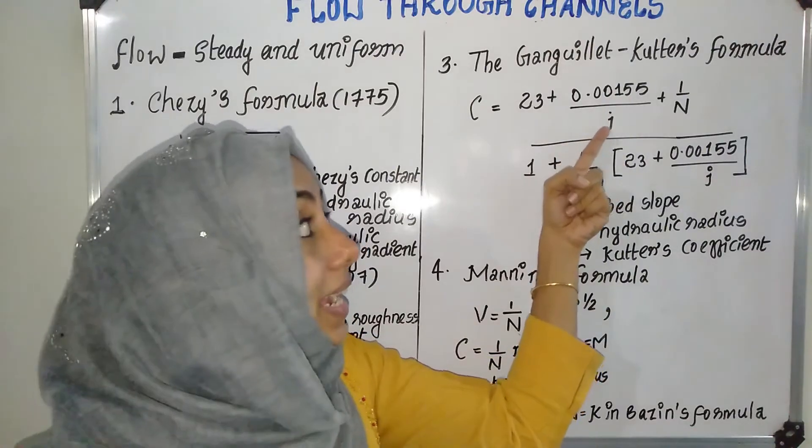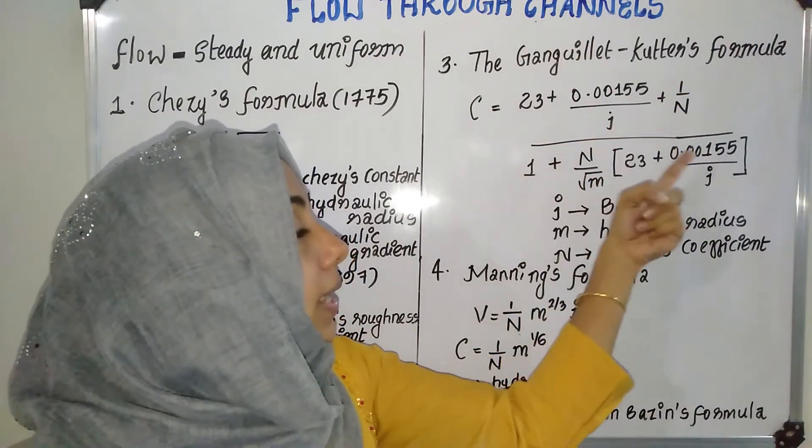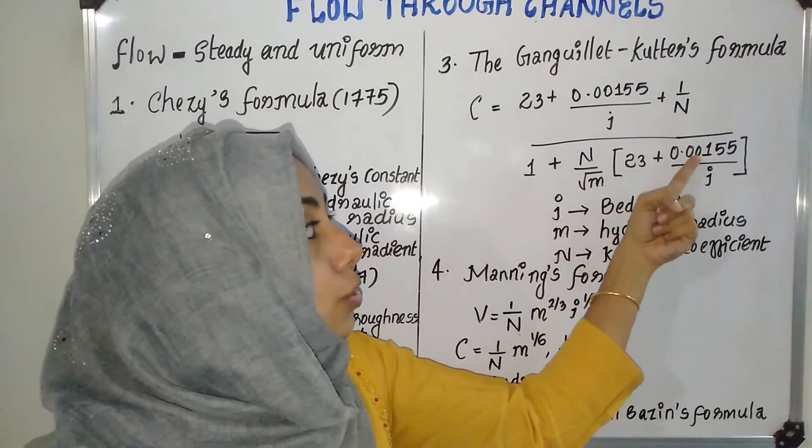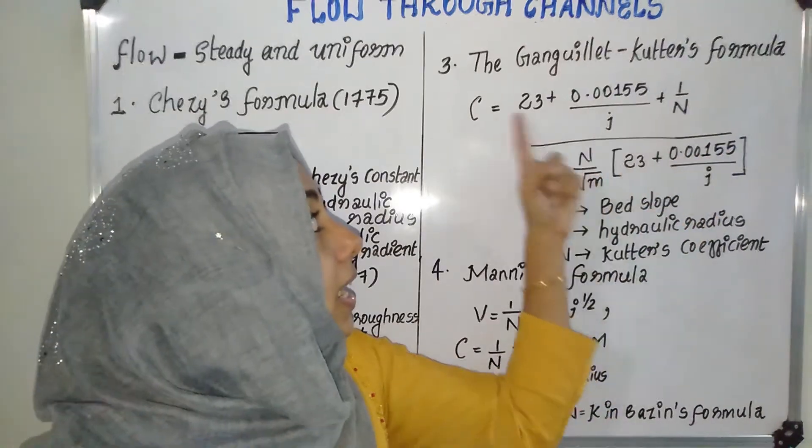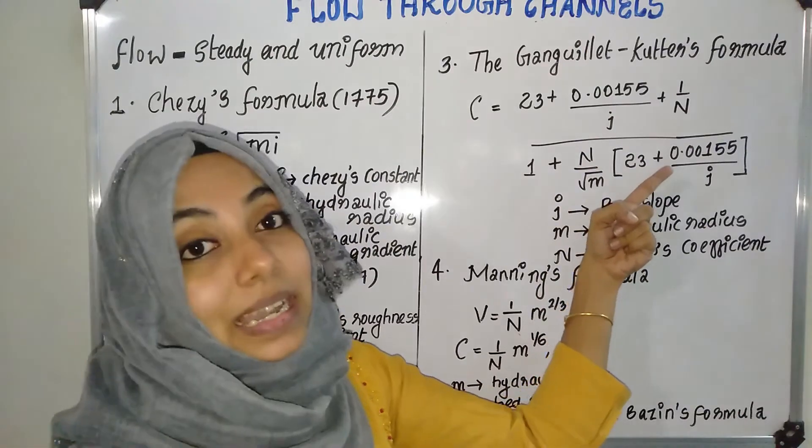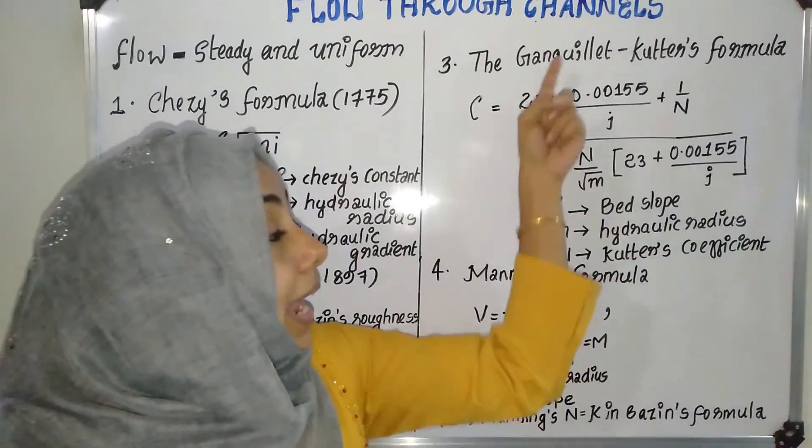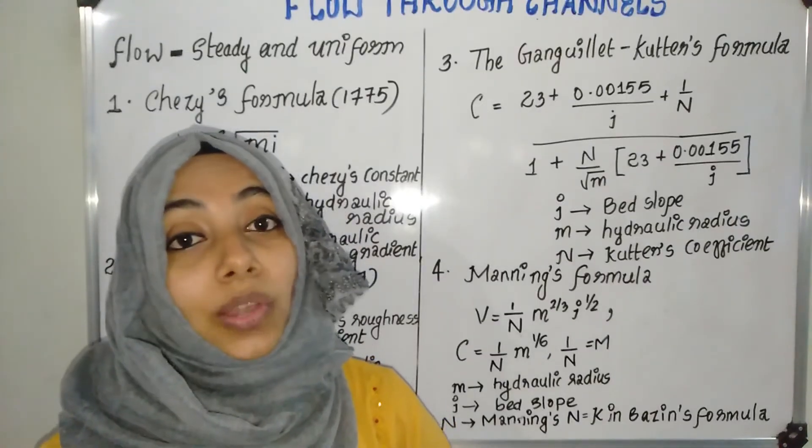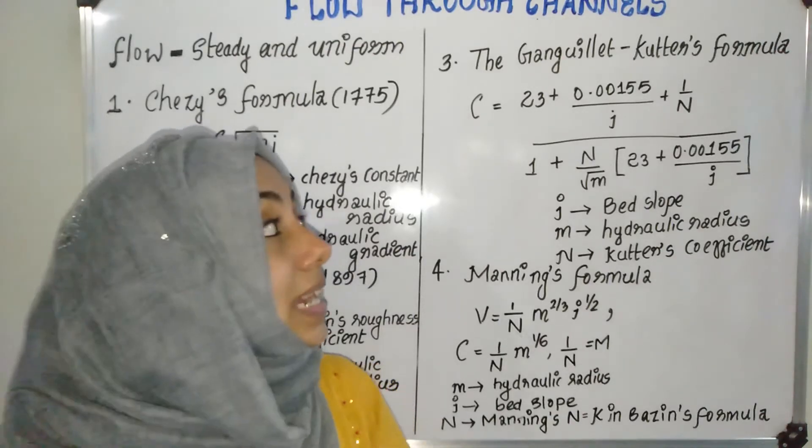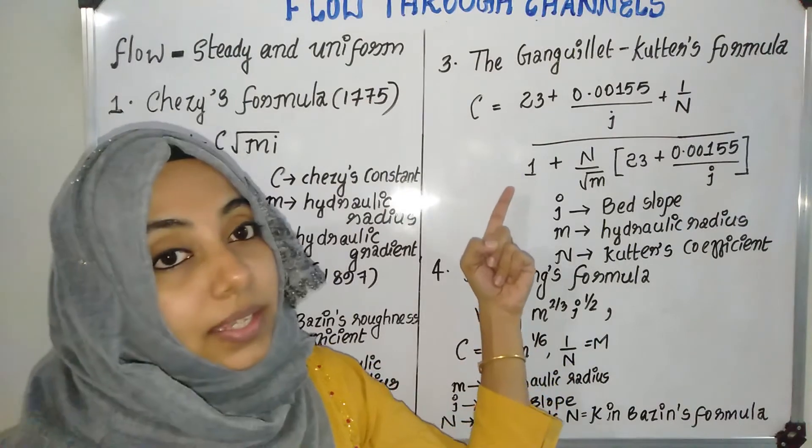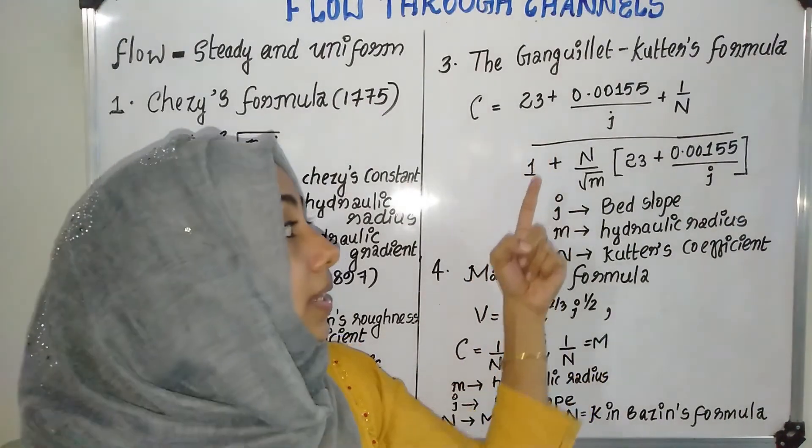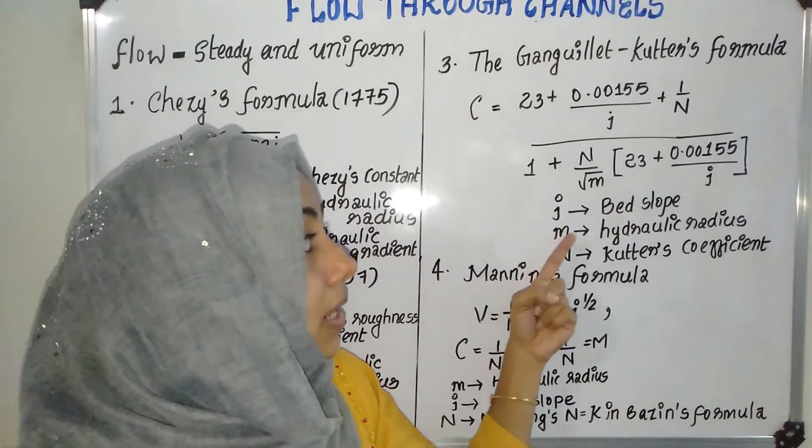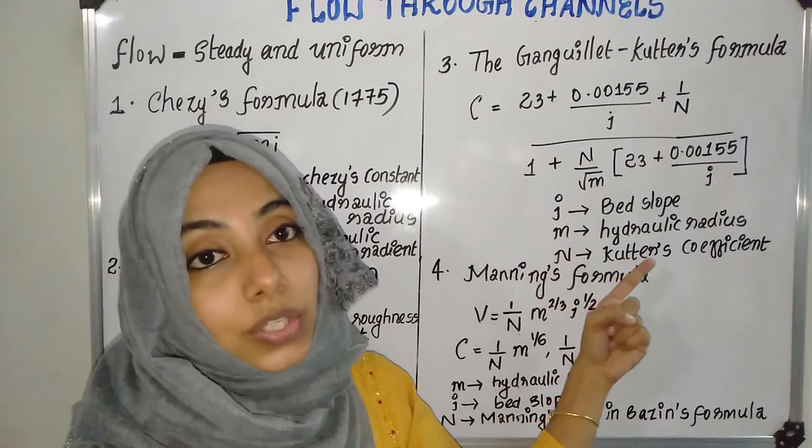Kutter's formula: C is equal to 1 divided by N times 23 plus 0.00155 by I plus 1 by N whole divided by 1 plus N by root M into 23 plus 0.00155 by I. This expression uses bed slope or hydraulic gradient. M is hydraulic radius, N is Kutter's coefficient.